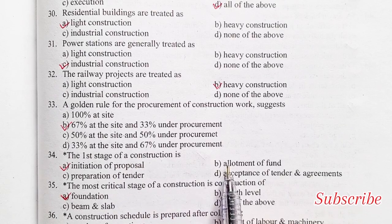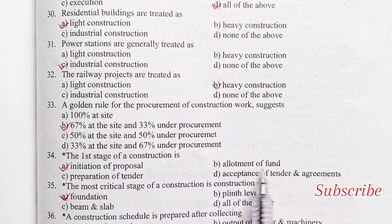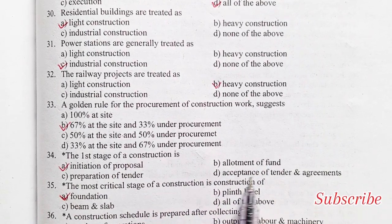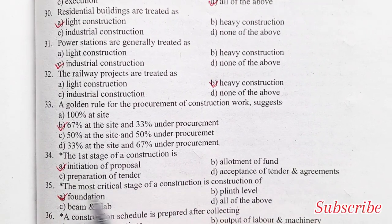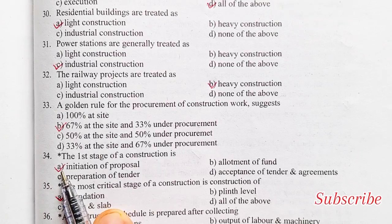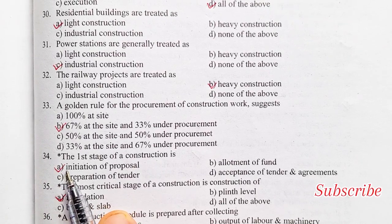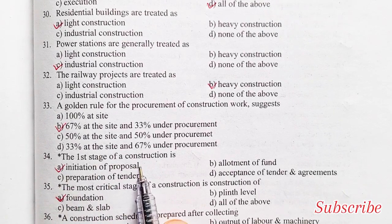The first stage of construction is: initiation of proposal, allotment of fund, preparation of tender, or acceptance of tender and agreement. Option A is the right answer — initiation of proposal.